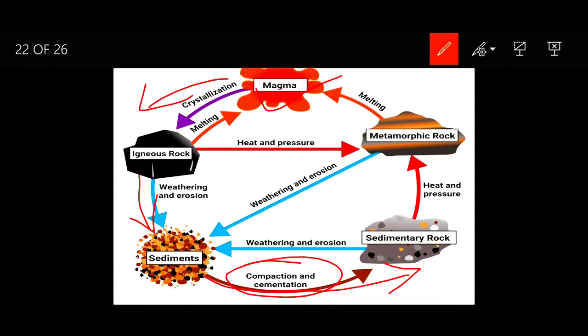These sedimentary rocks, if they undergo heat and pressure, will turn to metamorphic rock. This metamorphic rock, if exposed to high temperature, will melt and become magma. And again this magma will crystallize to form igneous rock.